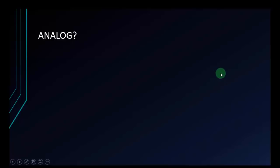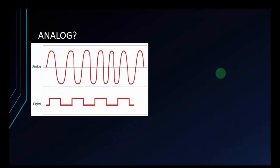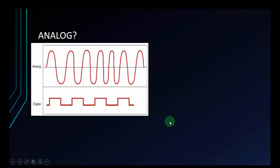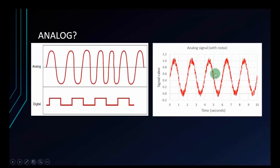The analog signal is a continuous signal. The analog signal graph is a sine, cosine, or any up-and-down curve like this. In the real world, when we collect the analog signal, it isn't simplified or smooth like this — the signal always has noise when we collect it.